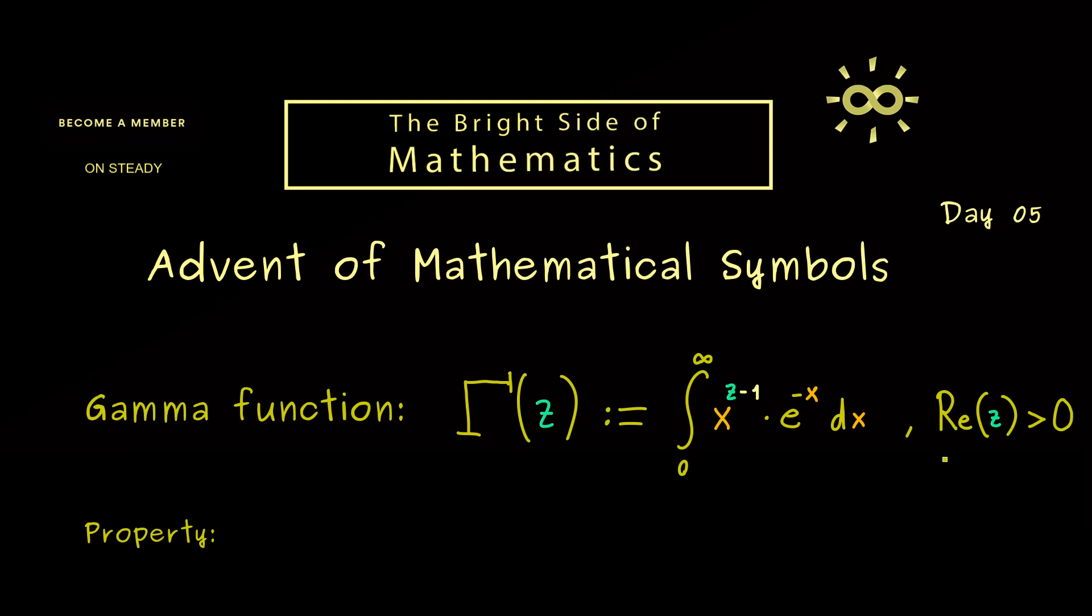This means it's allowed to put in natural numbers. There we find a nice property: gamma of n is exactly n minus 1 factorial. In other words, the gamma function is a generalization of the factorial.